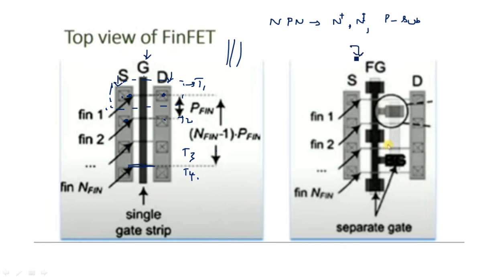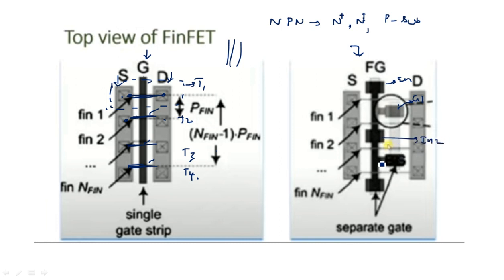Coming to the second type of FinFET technology: in the first type we saw a common input for all transistors, which may be a drawback. The gate is common for all transistors, so all transistors built in the single gate strip have a common input signal. In the second type — the separated gate — we use an insulator here and a conductor, which we can call gate 1, along with another insulator and gate 2.